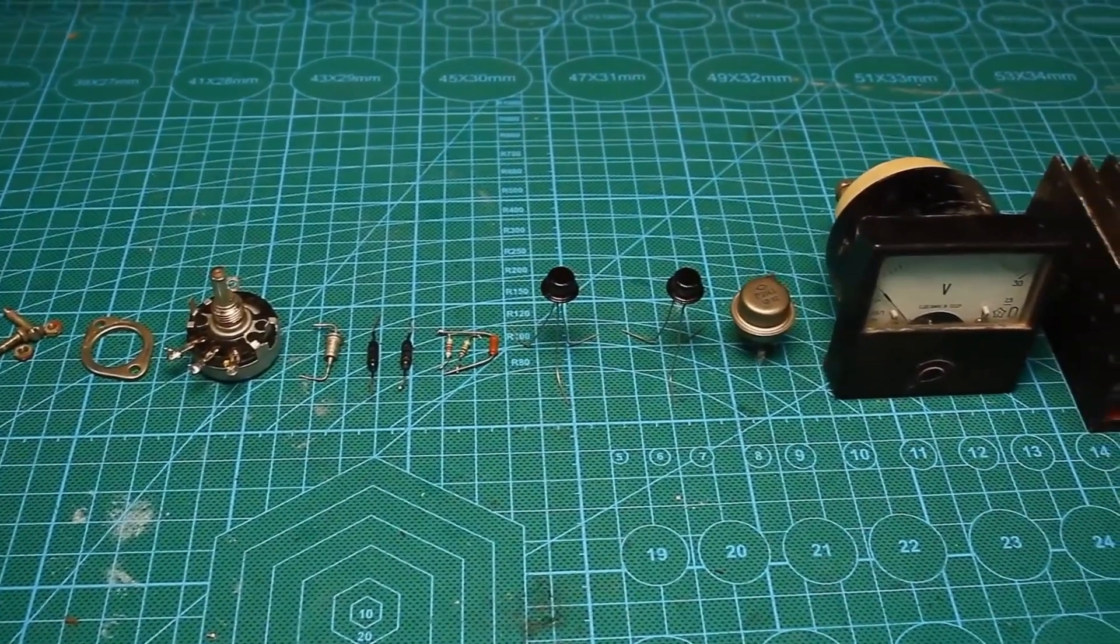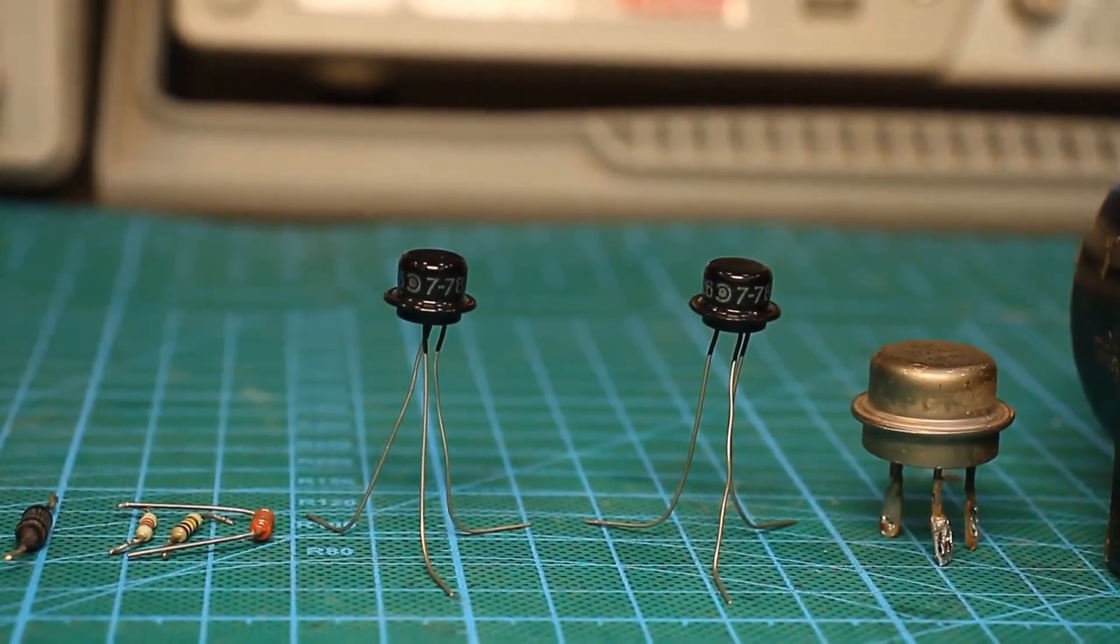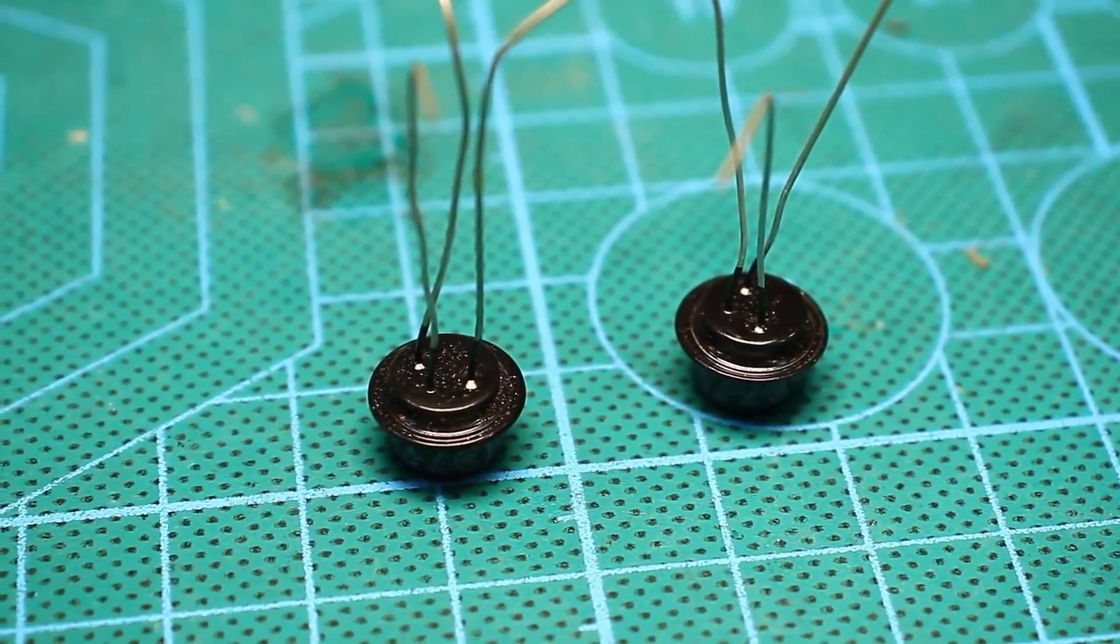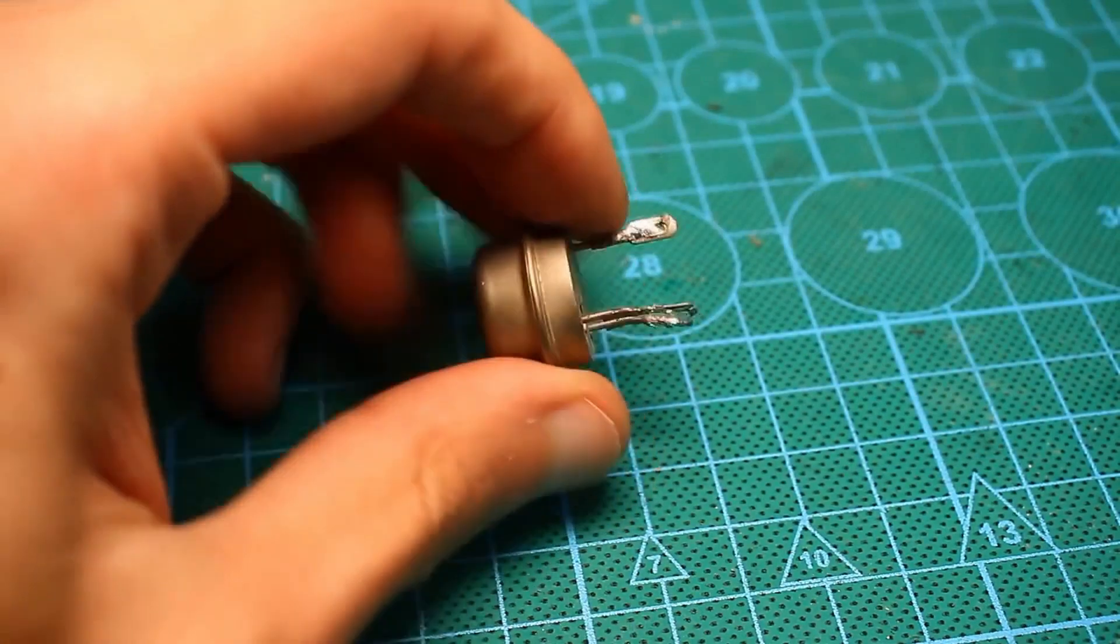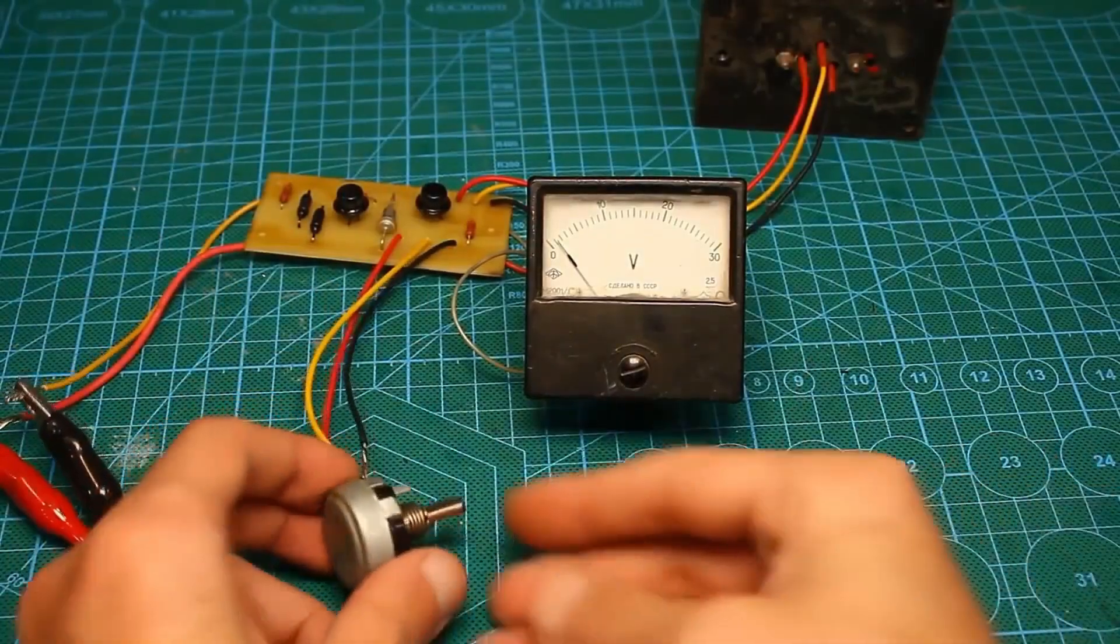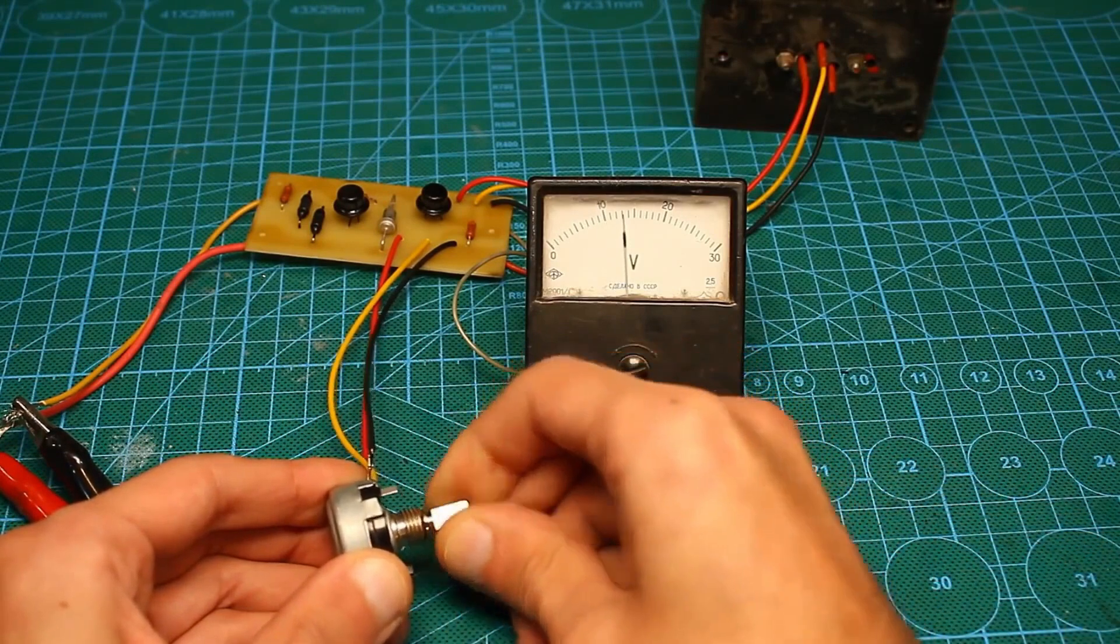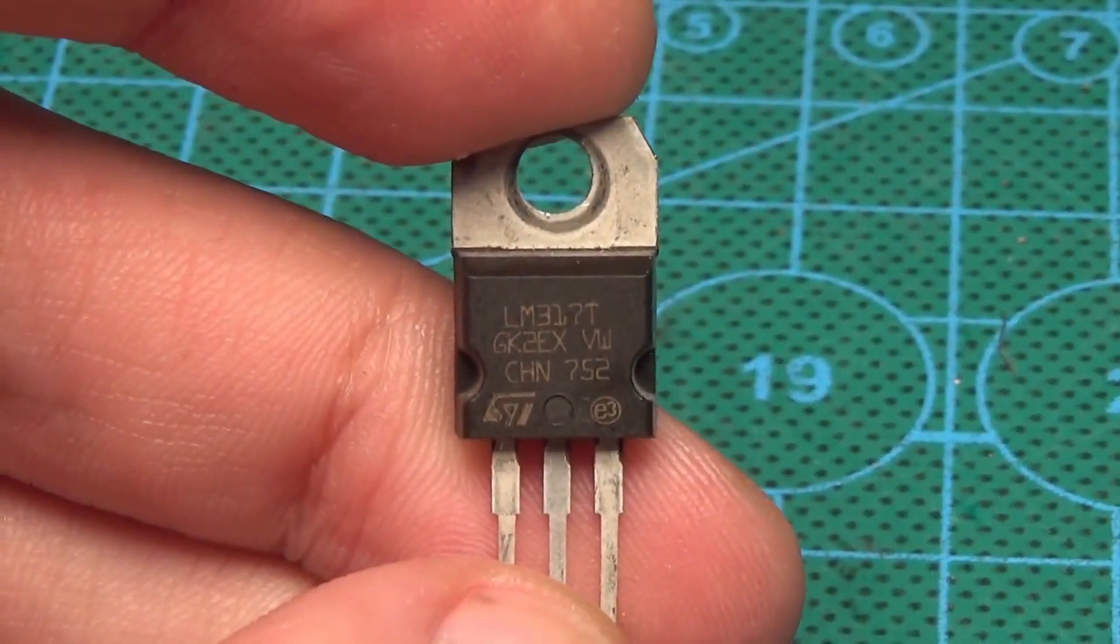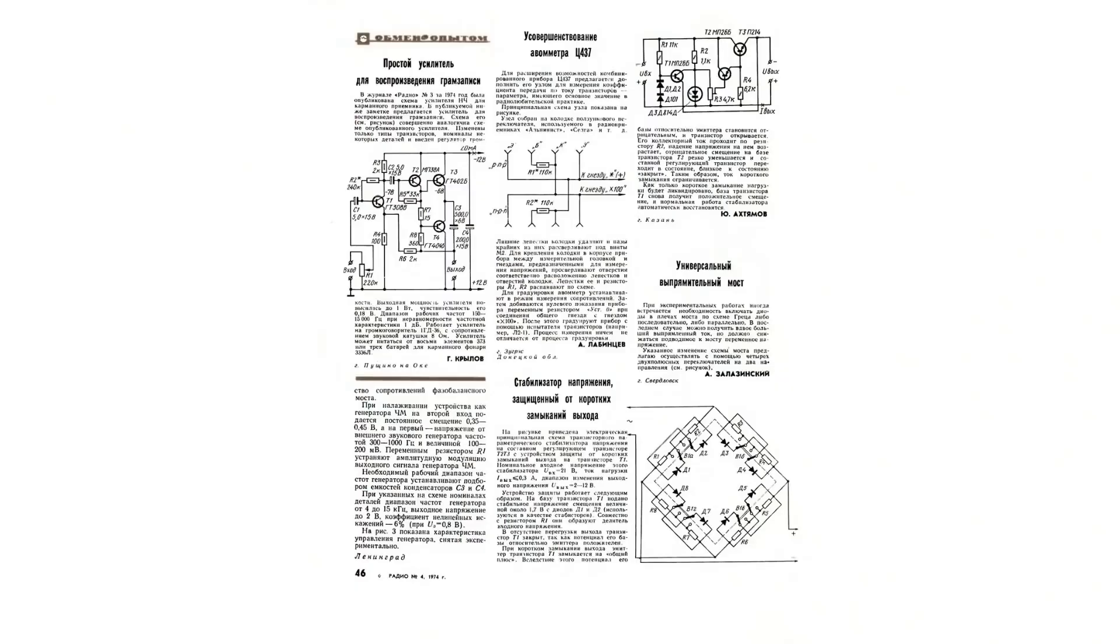So, to implement the next design, we'll need some junk that many people, including myself, keep because it's a shame to throw it away. The good old germanium transistors of the MP series, on which a whole generation grew up. The equally famous medium power transistors of the same period, and other small components. We will be assembling a simple stabilized power supply with adjustable output voltage and current protection. A good option for a beginner. And, yes, I am aware of the existence of IC regulators like the LM317. Let's continue.